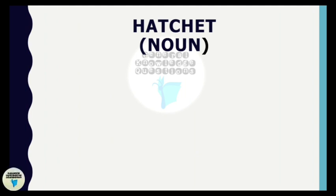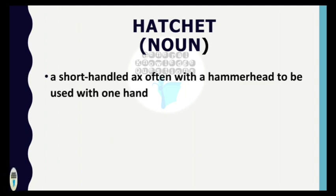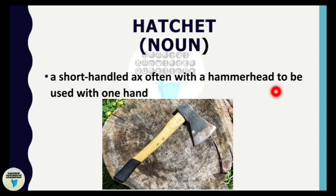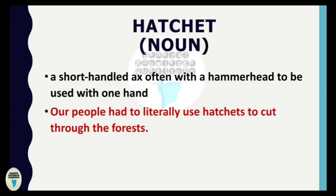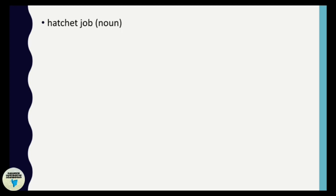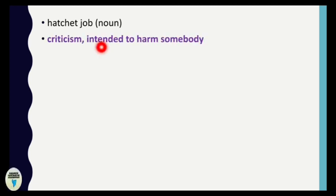The second word is 'hatchet.' Hatchet is a noun meaning a short-handled axe, often with a hammerhead, to be used with one hand — for example: 'Our people had to literally use hatchets to cut through the forest.' Now let's look at compound nouns: 'hatchet job' means criticism intended to harm somebody, such as: 'The press did a very effective hatchet job on her last movie.'